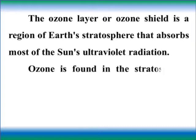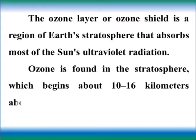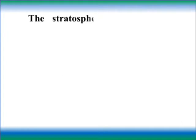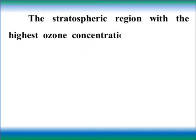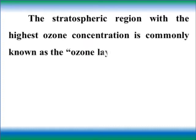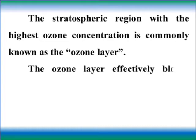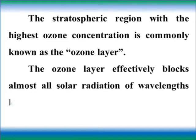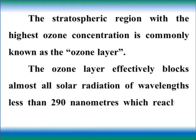Ozone is found in the stratosphere, which is about 10 to 16 km above earth's surface. The stratospheric region with the highest ozone concentration is commonly known as the ozone layer. The ozone layer effectively blocks almost all solar radiation of wavelengths less than 290 nanometers from reaching earth's surface.